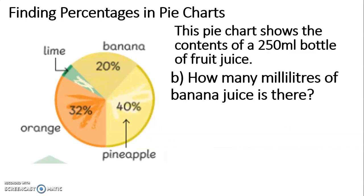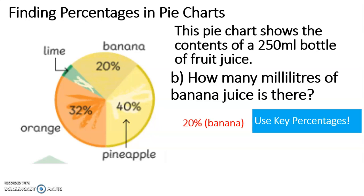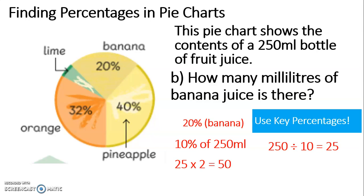B — how many millilitres of banana juice is there? We're going to need to find percentages of quantities. The percentage we need to find is 20% of the millilitres in the bottle, and the bottle is 250 millilitres. We can find 10% of any number by dividing that number by 10. 250 divided by 10 is 25, so 10% of 250 millilitres is 25 millilitres. Now we need to double that to find 20%. 25 multiplied by 2 is 50, so there are 50 millilitres of banana juice in that bottle.